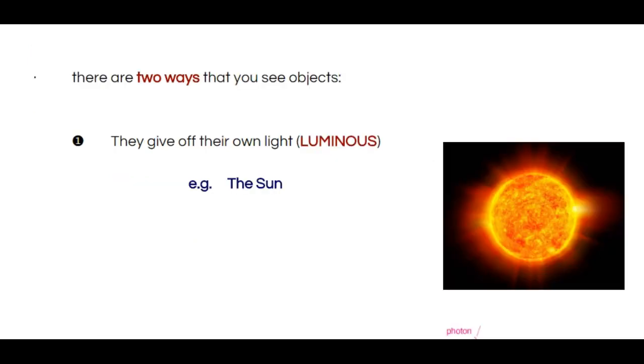The objects that are around us fall into one of two categories. The first category is luminous objects. What that means for an object to be luminous is it must give off its own light. For instance, the sun is giving off its own light.